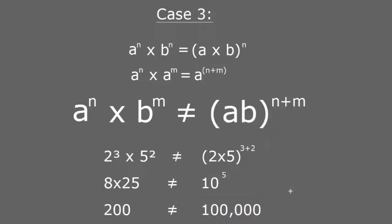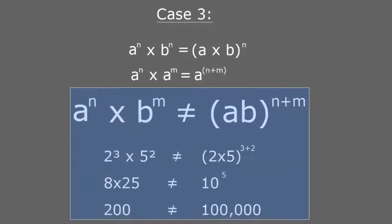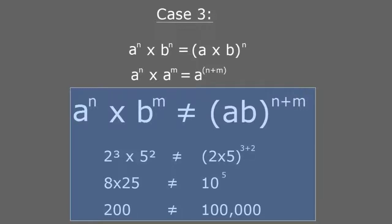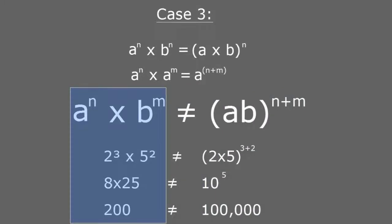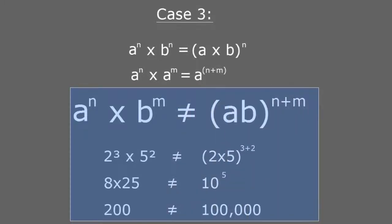Imagine that you were calculating something with money. In one way you got 200 dollars; in the other way you got 100,000 dollars. That's a big mistake if you're working with cash. This is just the result of confusion and not paying attention — a complete disaster. I hope you don't do it, because now I've shown you what happens when you do. You get something very different on one side, and something very different on the other.